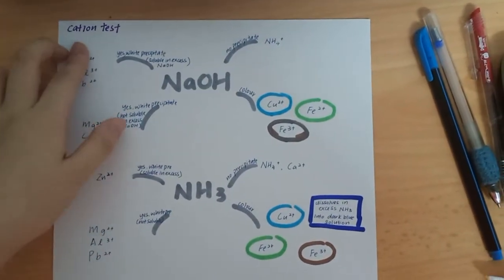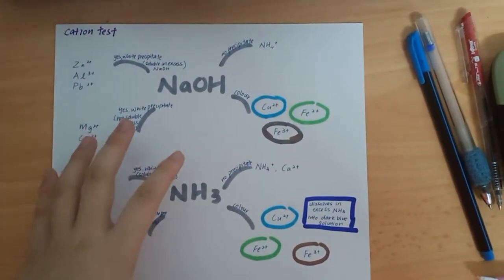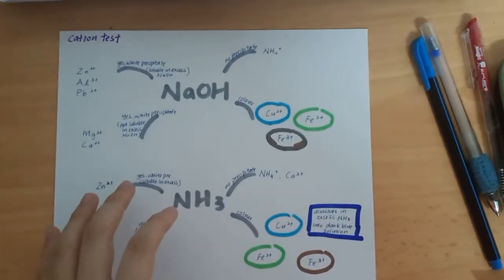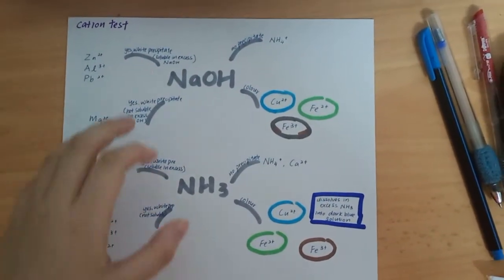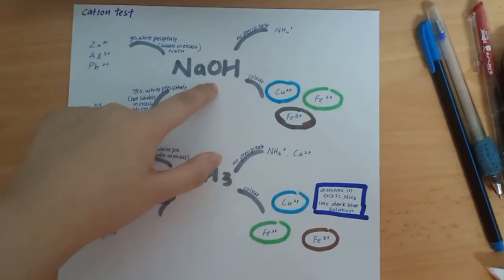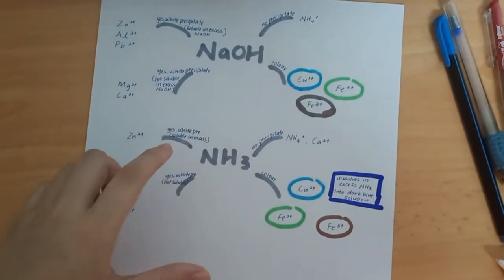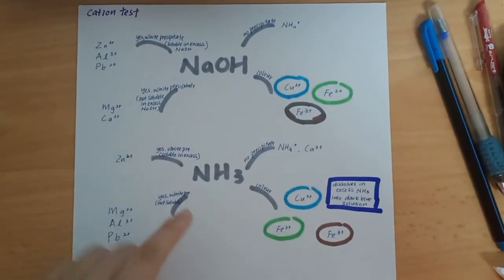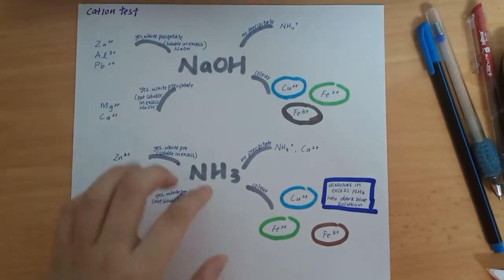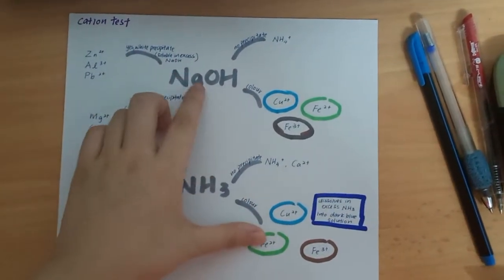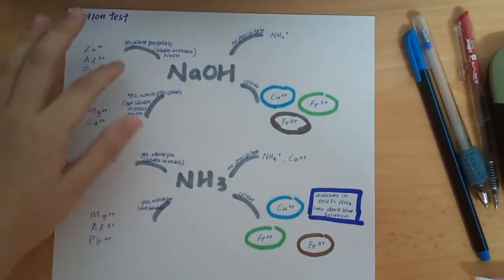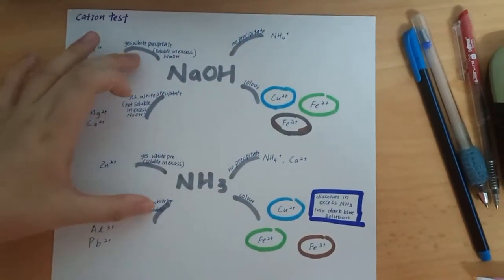As we know, cation test we put in two solutions to test if there's any precipitate form. First we just draw NaOH which is the first solution we put in, and then in another test we will put in NH3.